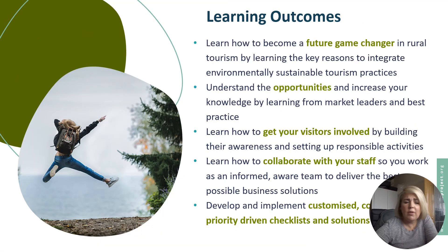So, learning outcomes — what are you expected to learn in this module? You will learn how to become a future game changer in rural tourism by learning the key reasons to integrate environmentally sustainable tourism practices. You will understand the opportunities and increase your knowledge by learning from market leaders and best practices across Europe. You will learn how to get your visitors involved by building their awareness and setting up reasonable activities. You will learn how to collaborate and get the best out of your staff so they are informed, aware and can contribute to the delivery of environmental business solutions. You will develop and implement customized, priority-driven environmental checklists and solutions.